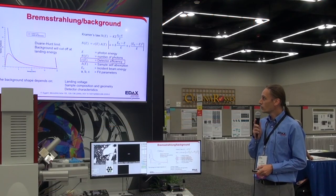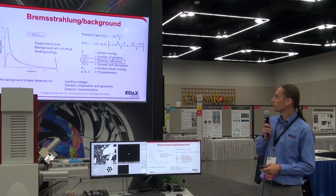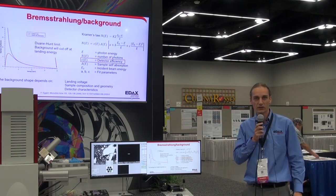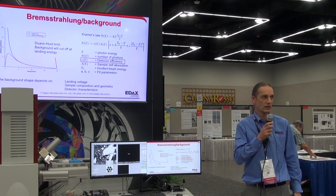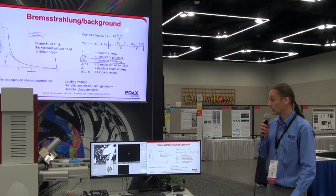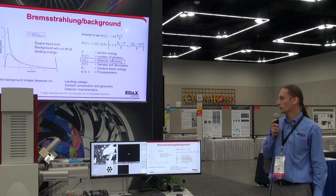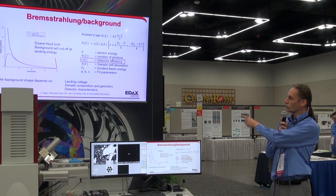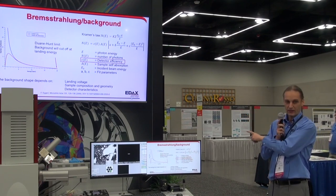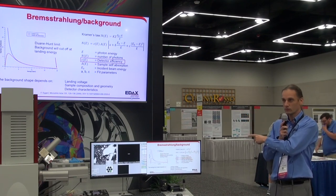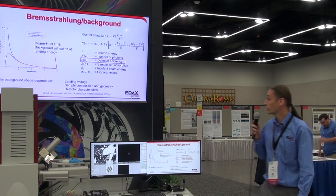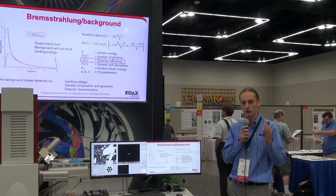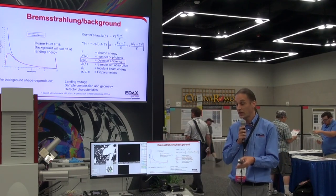One of the big things to note here is that both Kramers' law and our model tell us we can't have any x-rays emitted with higher energy than the incoming electron from the primary beam — also known as the Duane-Hunt limit. Essentially, we should see the background cut off at the landing energy, which should in most cases be equivalent to the acceleration voltage we're putting down through the microscope. That should be a sharp cutoff, at least.